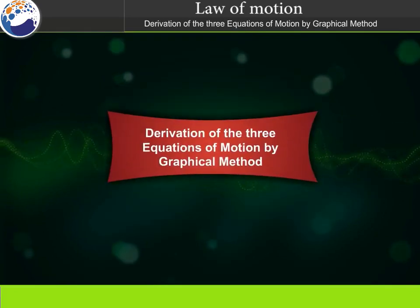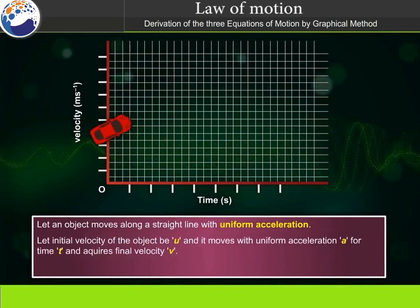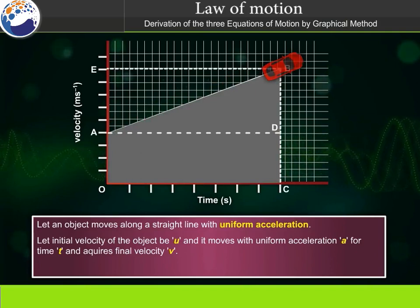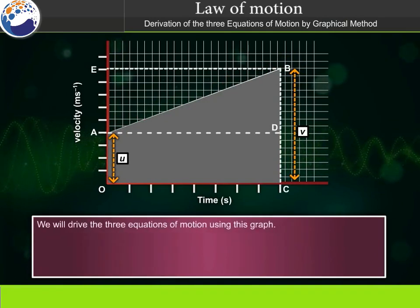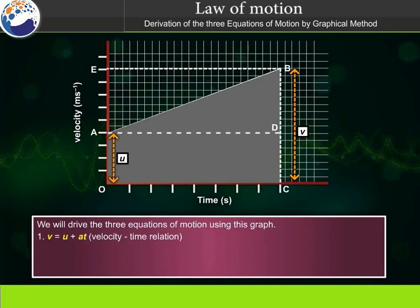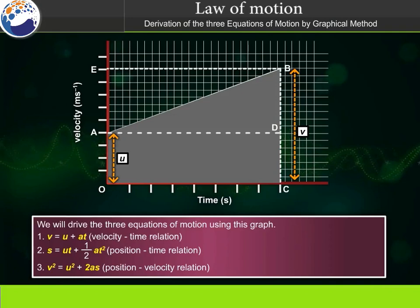Derivation of the three equations of motion by graphical method. Let an object move along a straight line with uniform acceleration. Let the initial velocity be u, moving with uniform acceleration a for time t, acquiring final velocity v, and covering distance s. The three equations of motion are: v equals u plus at; s equals ut plus half at squared; and v squared equals u squared plus 2as.